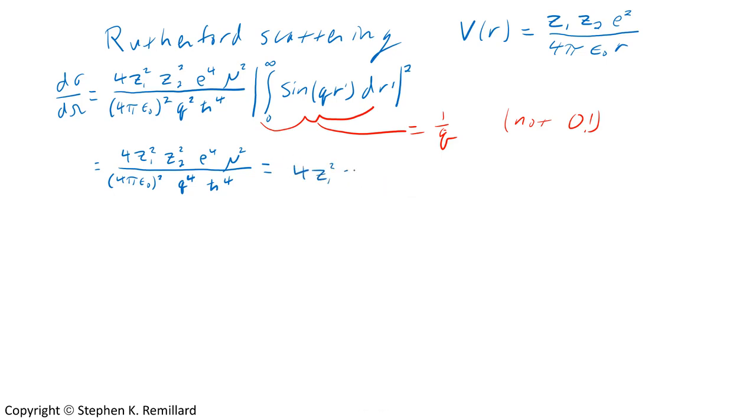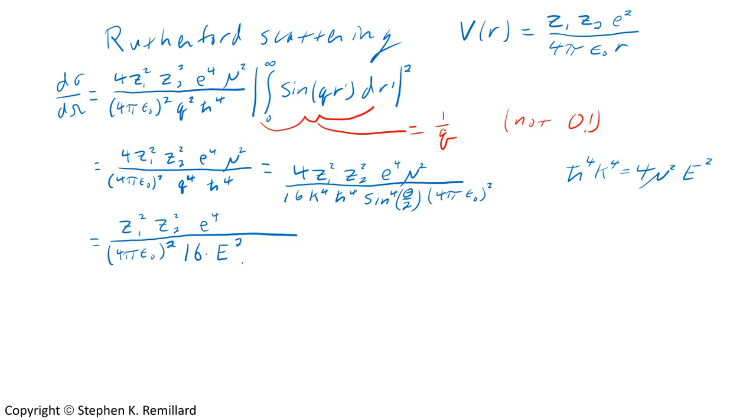So it's q to the fourth. Remember our expression for q: 2k sine of half theta. Now I have k in here, and I'm not so comfortable with k. It's not the most practical quantity, especially in an experiment. You like energy. We tune a beam to a certain energy. So replace k with E using energy is h-bar squared k squared over 2 mass. That's the Rutherford differential scattering cross section.